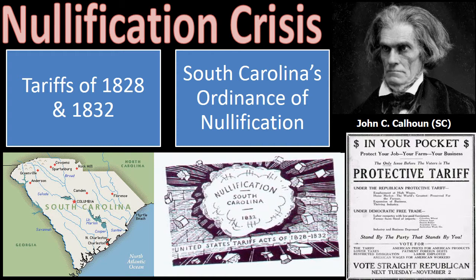Citing the argument of nullification from the Virginia and Kentucky resolutions and the Tenth Amendment, John C. Calhoun argued that the states can determine the constitutionality of federal laws. In 1832, Congress passed an additional tariff. In response, South Carolina adopted the Ordinance of Nullification, nullifying both tariffs passed by Congress. They also began military preparations to resist the federal government. Congress then passed the Force Bill, authorizing Jackson to use military forces against South Carolina. Congress also passed a Compromise Tariff, which satisfied South Carolina, who repealed their ordinance. This didn't fully resolve the state's rights issue, however.